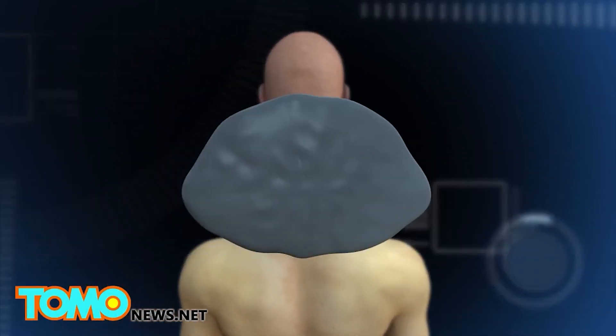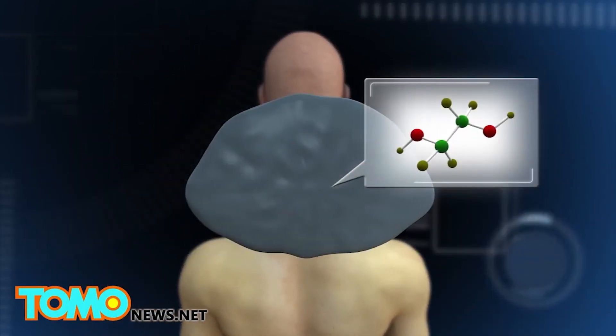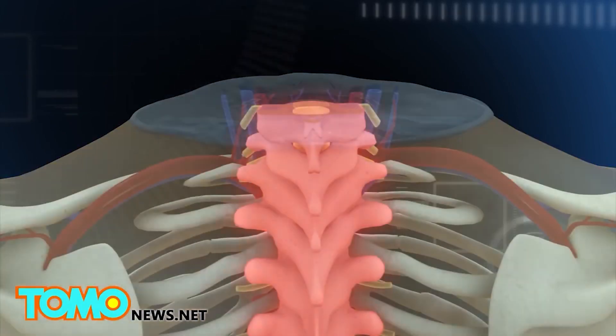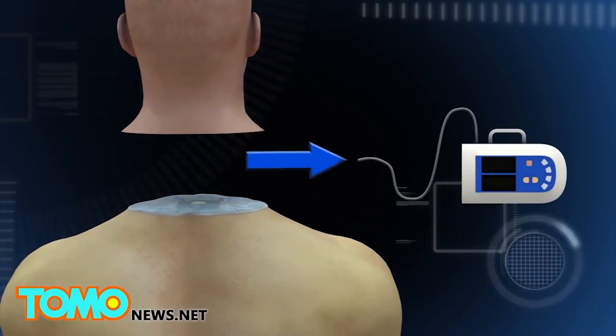First, both patient and donor's heads are severed, an adhesive known as polyethylene glycol would then be used to preserve nerve cell membranes. Spinal cord stimulation could speed a potential patient's recovery. A negative pressure device would encourage nerves to connect.